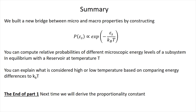What we did today is build a new bridge between the microscopic world and the macroscopic world by constructing the Boltzmann probability formula. We can use it to compute relative probabilities of different microscopic energy levels of a subsystem if the subsystem is in equilibrium with a large reservoir at temperature T. Using this type of analysis you can explain what you consider to be high, low, or intermediate temperature by comparing the relevant energy differences in your physics system to k_B T of the reservoir. Next time we'll talk about the proportionality coefficient in the Boltzmann probability and start to develop the reasons why that quantity — the partition function — is such an important and valuable tool in statistical mechanics.